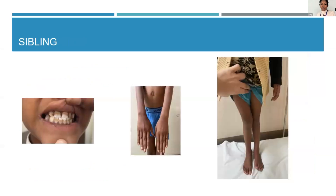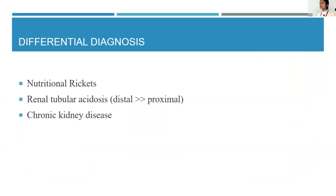The older sibling also had marked enamel hypoplasia, genu valgum, and nodding wrist. With this, we considered nutritional rickets as the first possibility, as we could not assure compliance with the prescribed vitamin D, and it is a very common cause. Given the history of polyuria, polydipsia, and affliction in the elder sibling, we also considered distal renal tubular acidosis (RTA) and the role of chronic kidney disease.